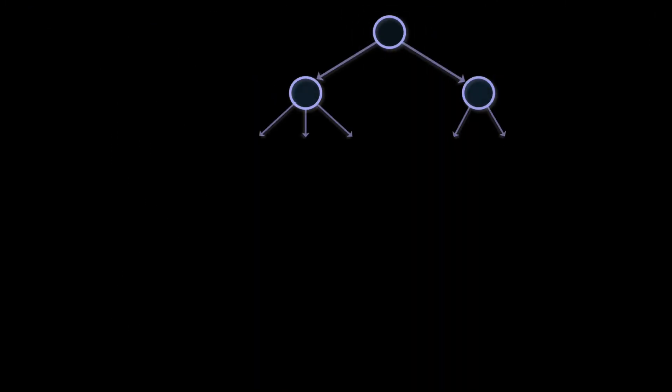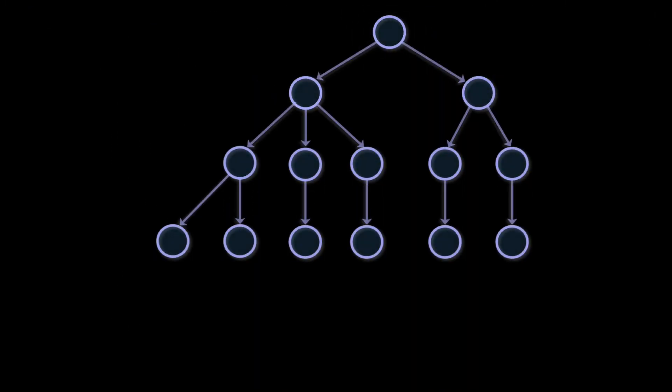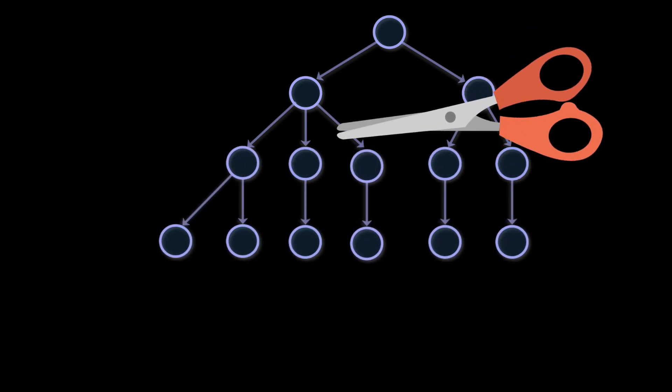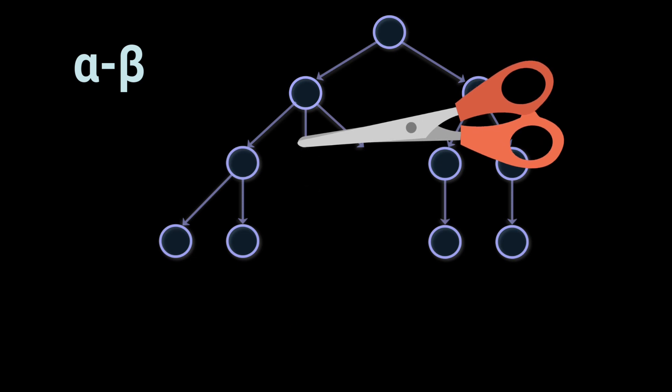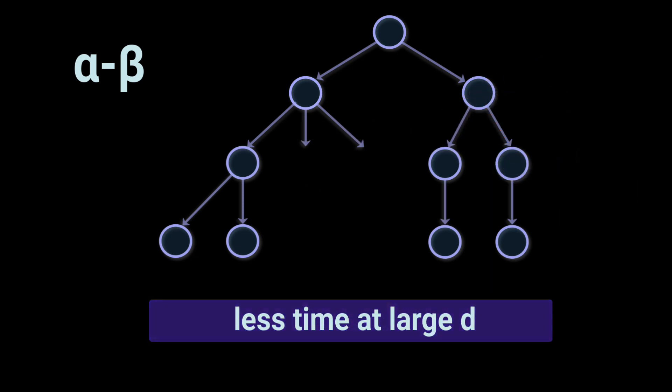Their programs could use the results of one iteration to reorder nodes when searching deeper. If this led to pruning by heuristics like alpha-beta, time at the costly deeper levels could be saved.